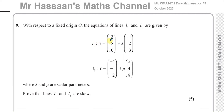Line 1: R equals (2, 8, 10) plus lambda times (−1, 2, 3). Line 2: R equals (−4, −1, 2) plus mu times (5, 4, 8), where lambda and mu are scalar parameters. Prove that line 1 and line 2 are skew.